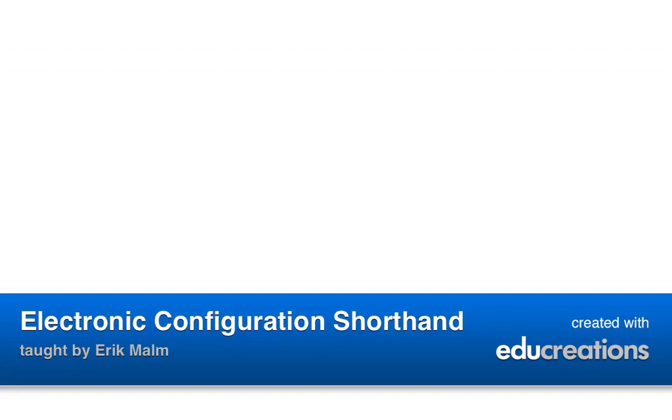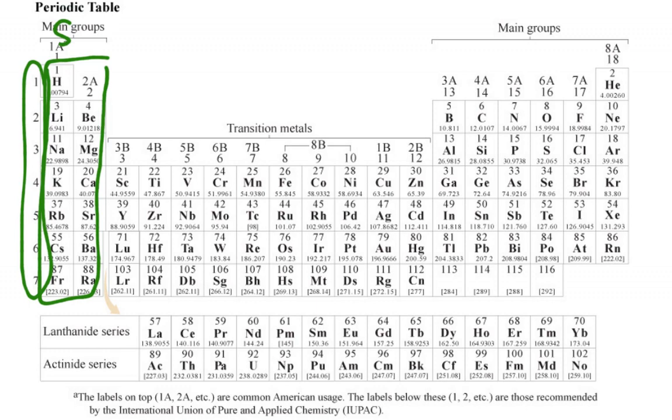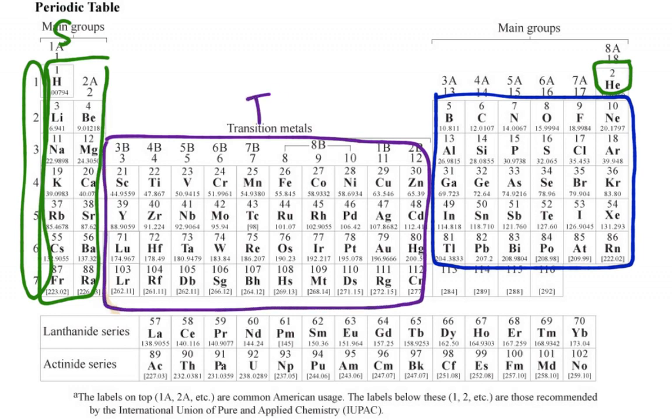Alright, so we are going to be talking about shorthand electronic configuration, which means that we need to go over how to do it longhand, remind ourselves of that really quick, which means that we need to look at the periodic table here. If we're looking for electronic configuration, we are going to be using these numbers a lot. So if you don't have those on your periodic table, you should probably have those in. We need to know that this is my S block with helium in there. This is my P block. This is my D block, D as in dog. And this is my F block.